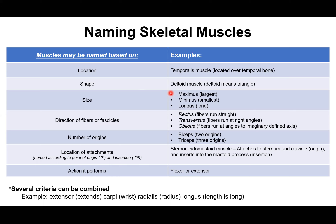Of the three gluteal muscles, the maximus is the largest and the gluteus minimus is the smallest. Another term that describes size is longus — longus means it's a long muscle, and brevis means it's the short muscle. Longus and brevis kind of go together; for example, you'll have an extensor digitorum longus and an extensor digitorum brevis — a longer version and a shorter version of the muscle.